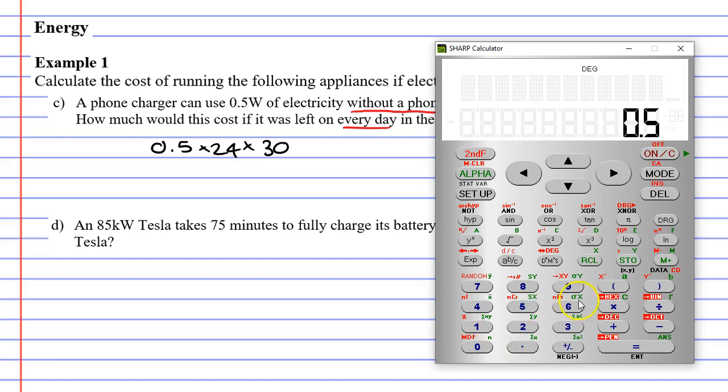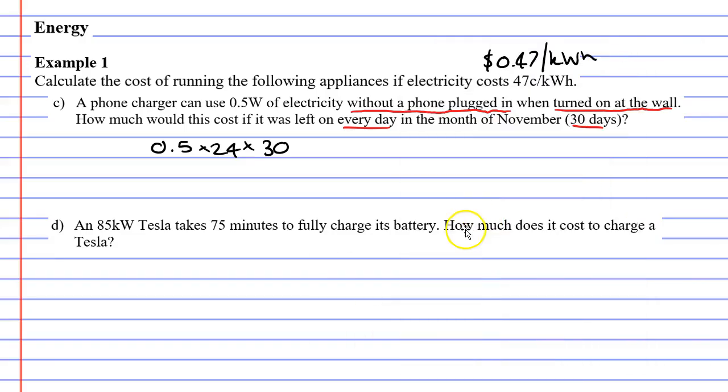0.5 times 24 times 30 equals, and we get 360. Now we have to be really careful here, because it's not 360 kilowatt hours, it's actually 360 watt hours. And the reason for that is because it was 0.5 watts, it was not 0.5 kilowatts.